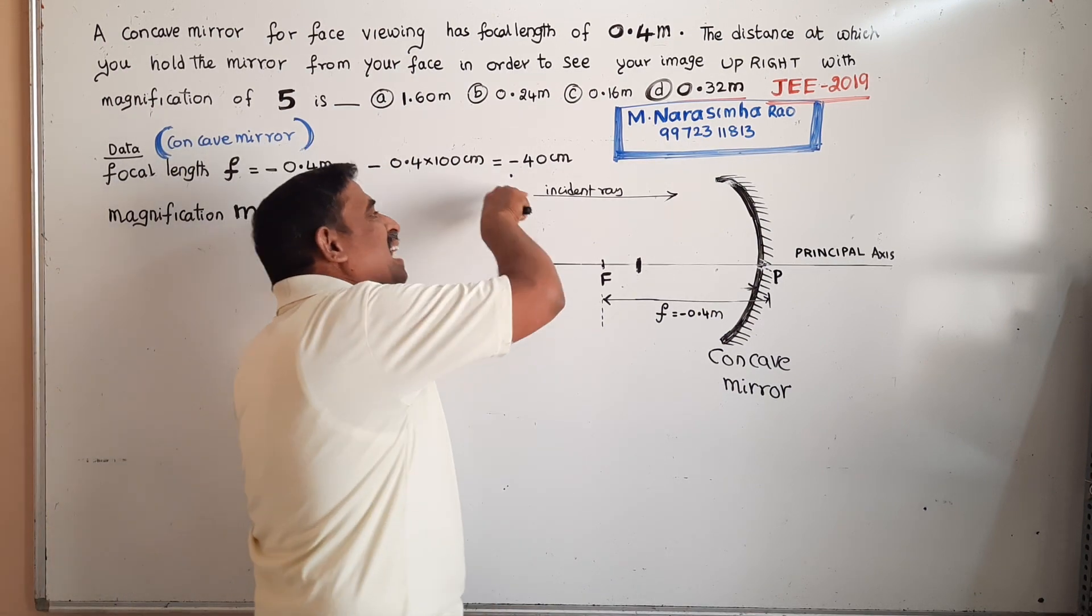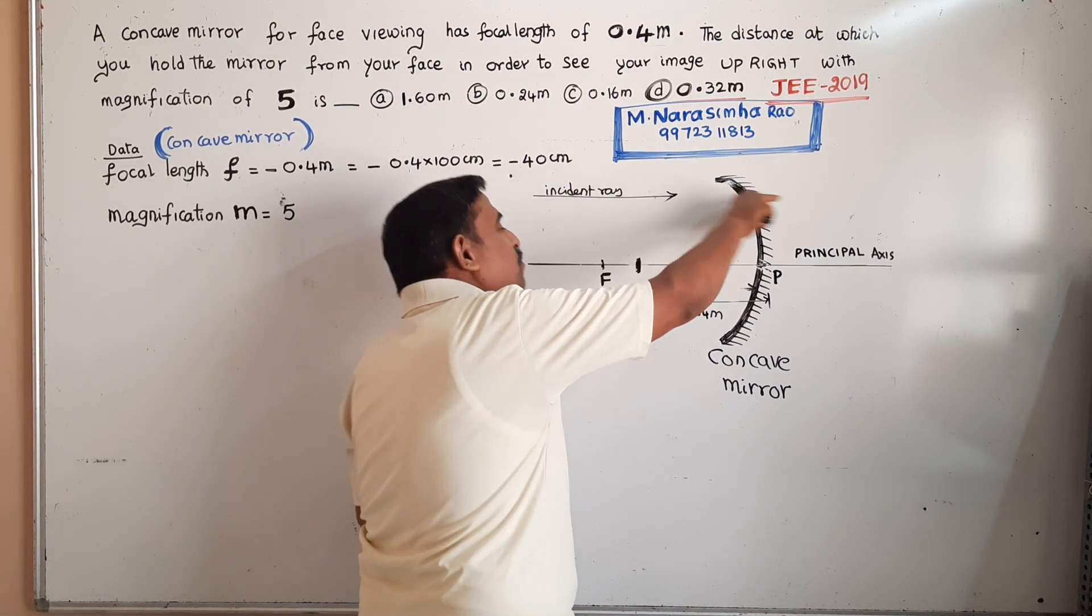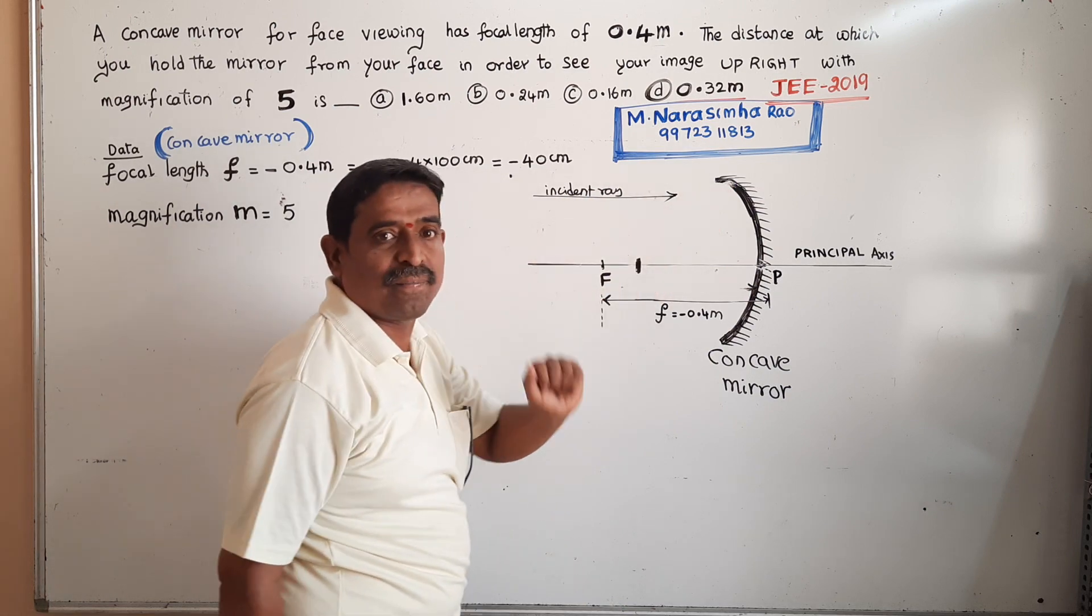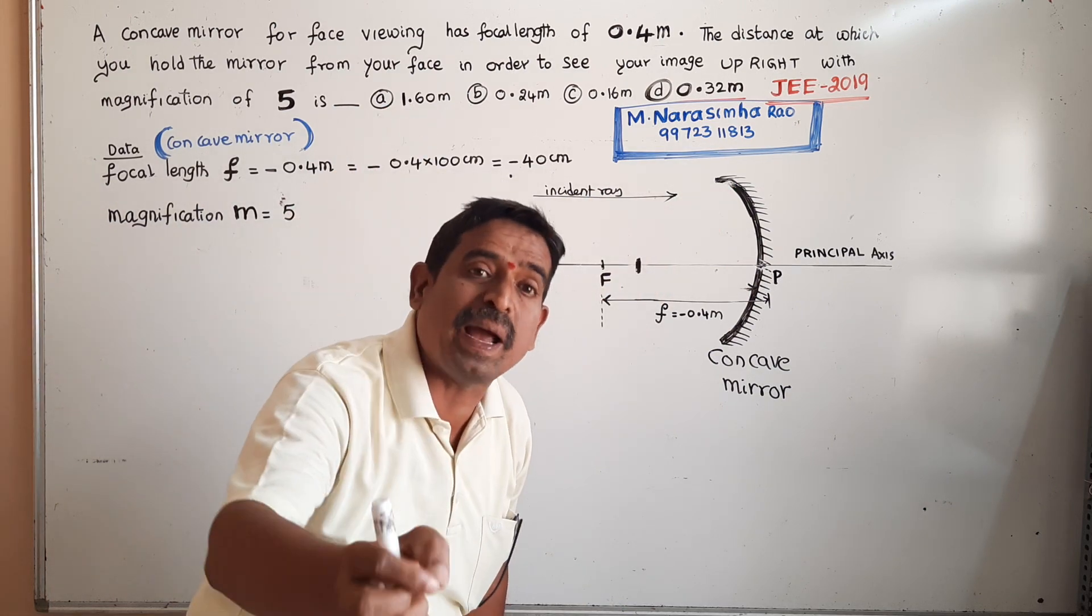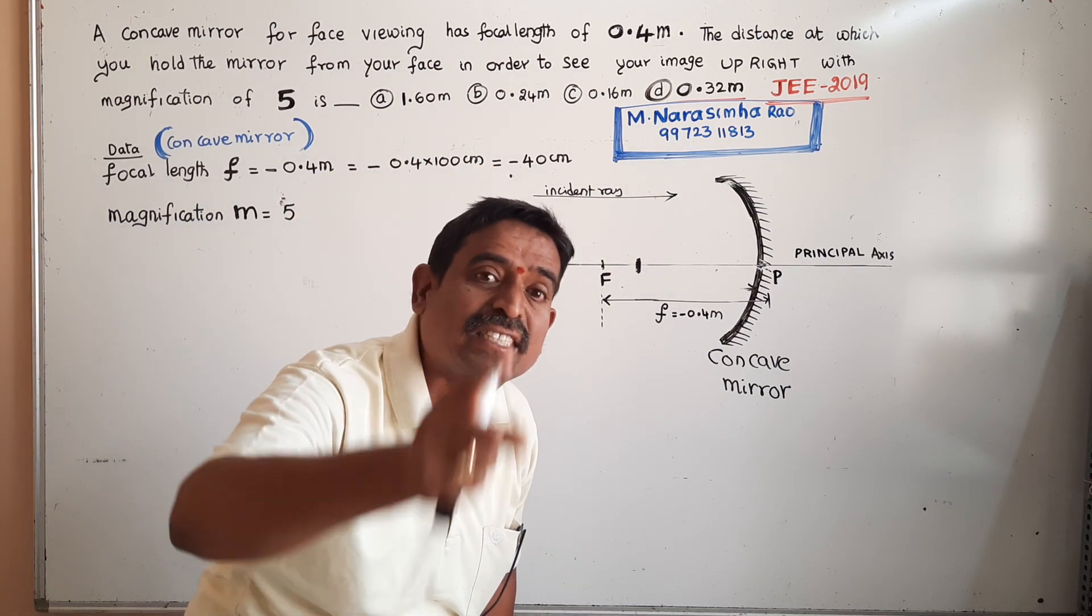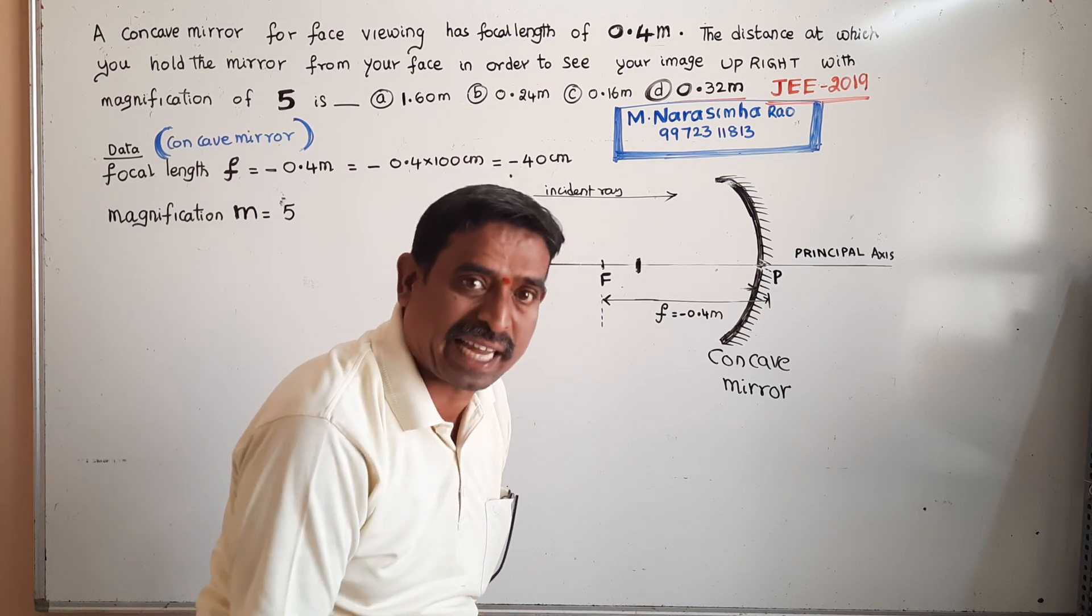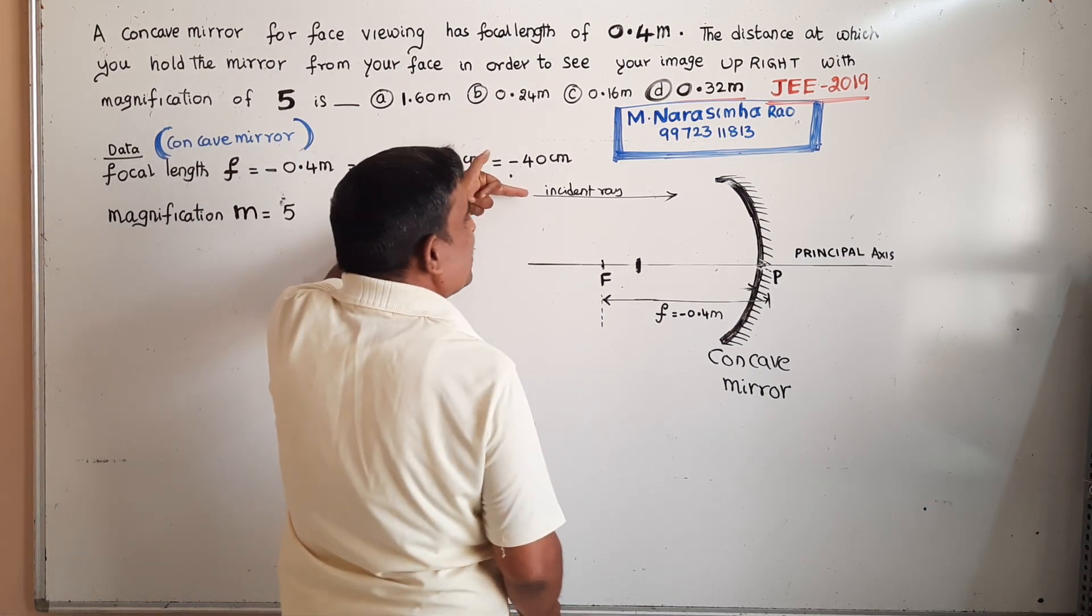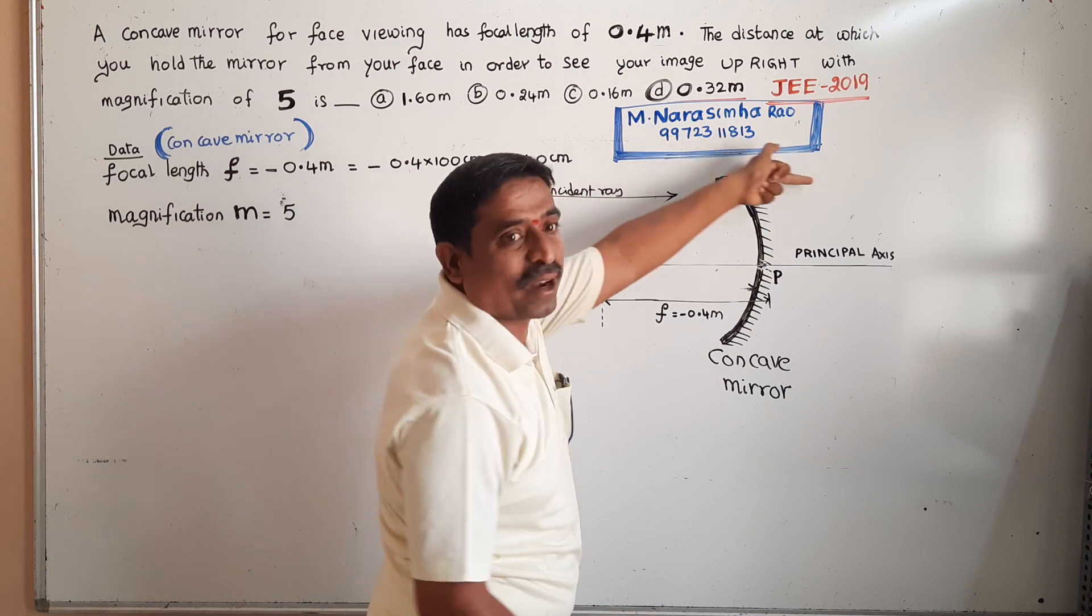The reason is that incident light rays are always from left to right. We have to measure all distances from the pole of the concave mirror.